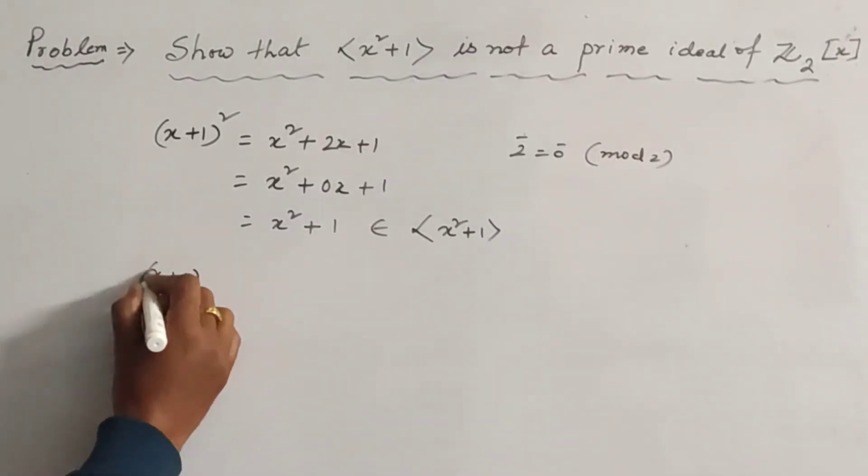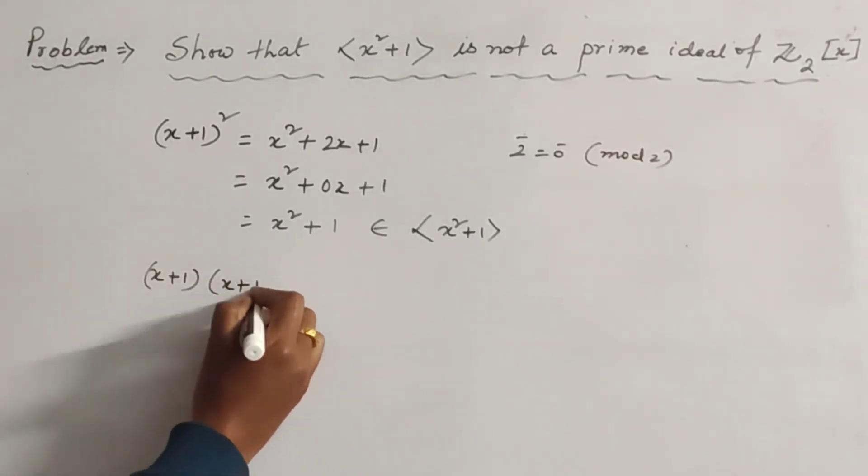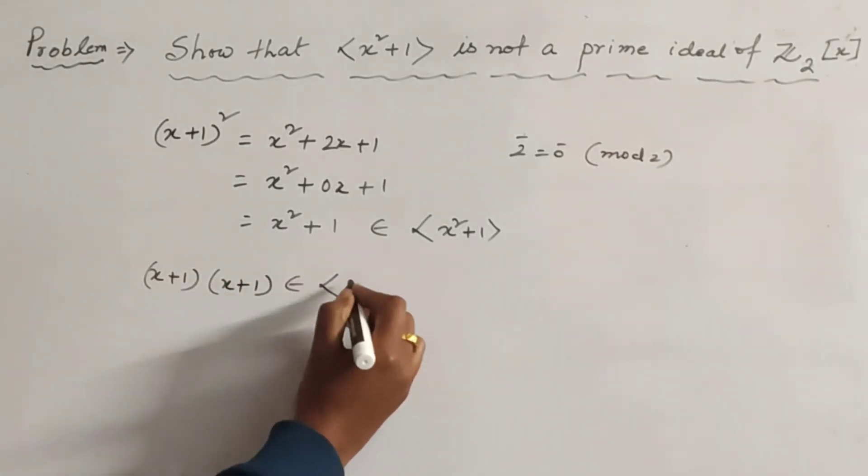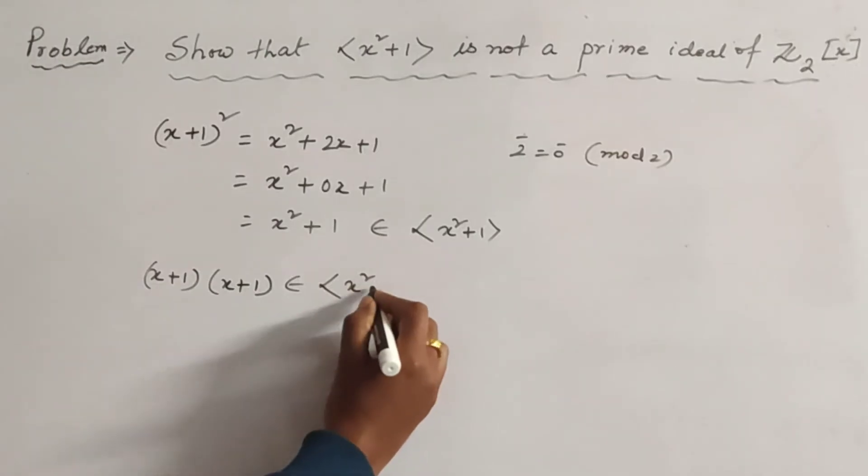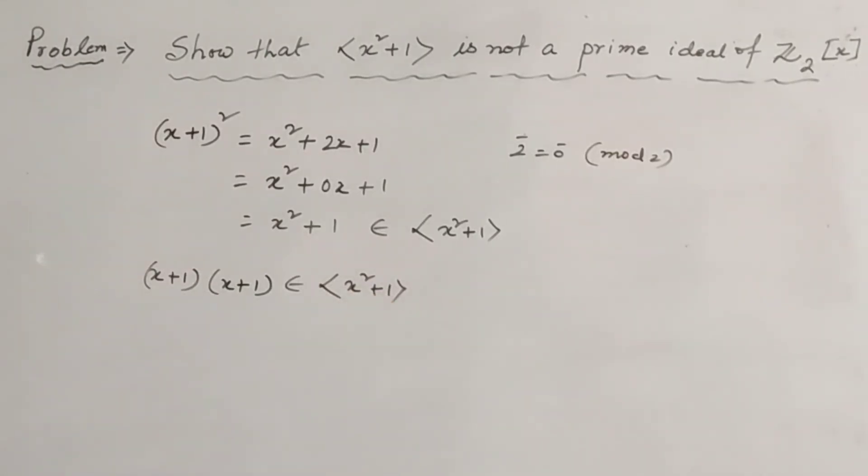Now (x + 1), this whole square can be written as (x + 1) into (x + 1) belongs to ⟨x² + 1⟩.